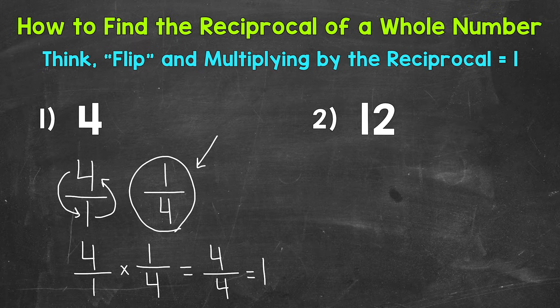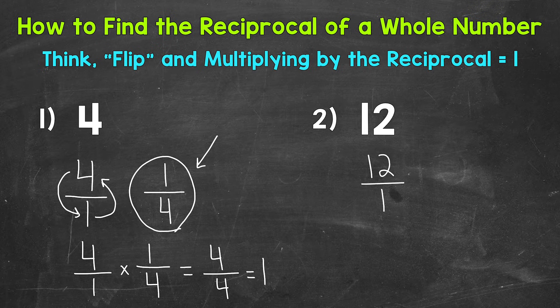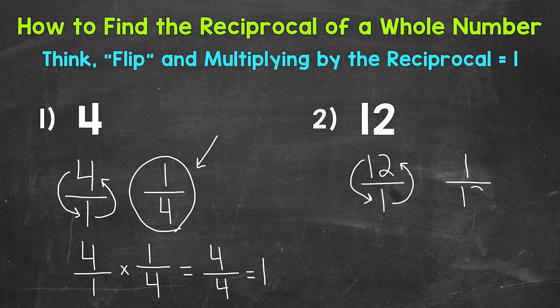Let's move on to number 2, where we have 12. So the first thing that we need to do is write that whole number in fractional form, and we do that by putting the whole number over 1. And then we flip that fraction. So the 1 is going to become our numerator, and the 12 is going to become our denominator. So the reciprocal of 12 is 1 twelfth.